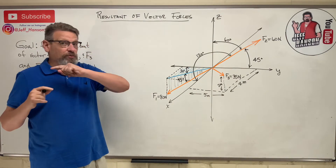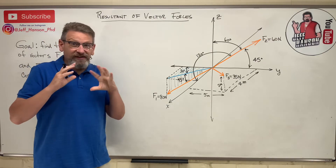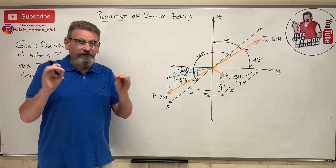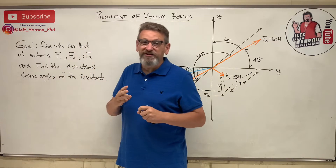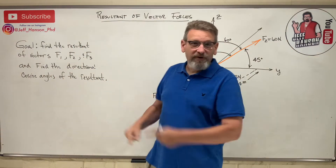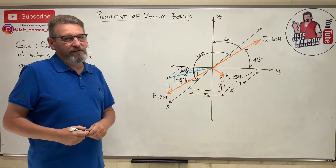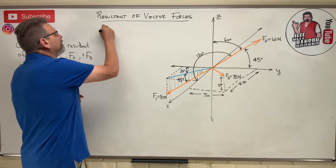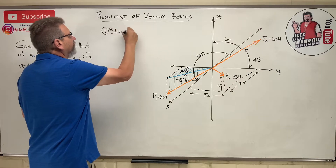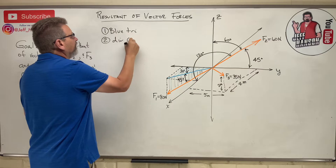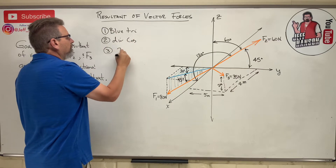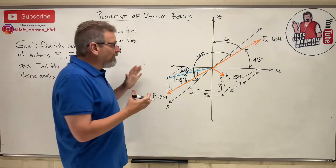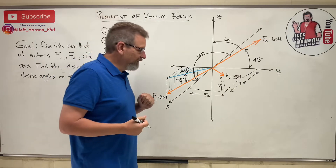Hey friends, look what we got here — the resultant of vector forces. This is kind of going to be a summary for all of those chapter 2 videos on 3D forces. There are three different ways you can express 3D vectors: number one, blue triangles; number two, directional cosines; and number three, coordinates or the lambda hat method. Those are the three ways I can give vectors.